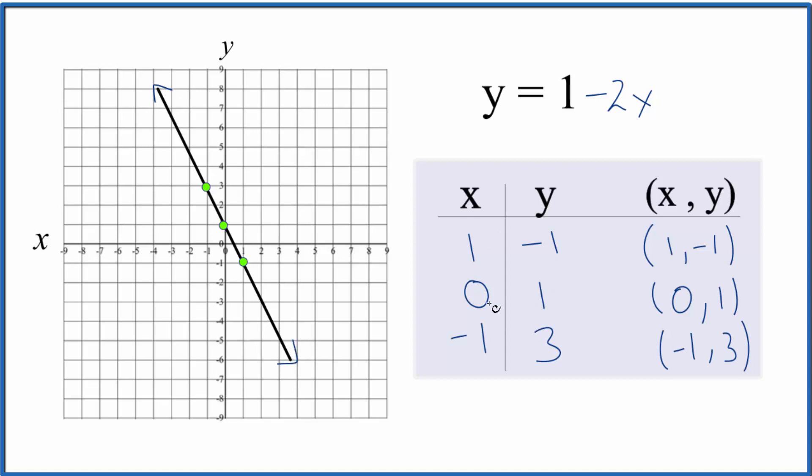We could put other numbers in for x, and they would give us values of y that show up on this line here. So this is our equation for y equals 1 minus 2x and 2x plus y equals 1, either way. Note that you could also use slope intercept formula to figure out the graph for y equals 1 minus 2x, and that will give you the same answer as using the table of values.